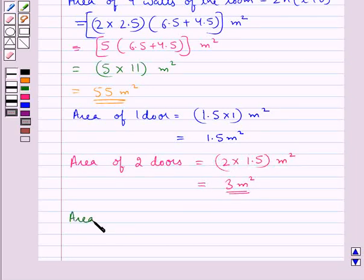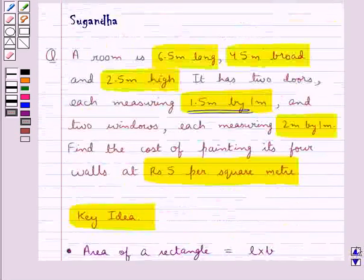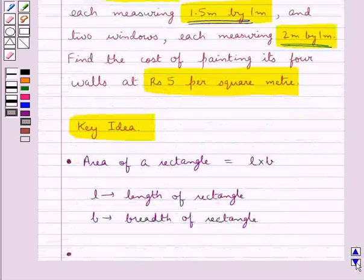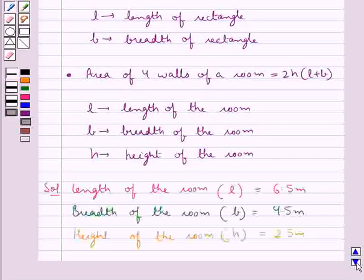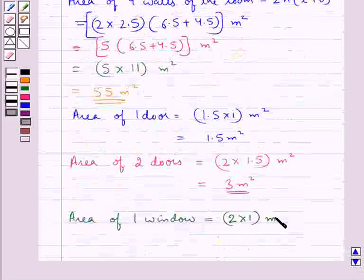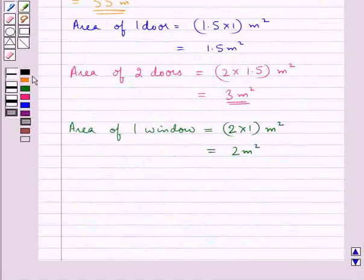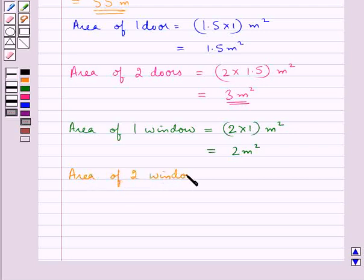Next, the area of 1 window: as given in the question, 1 window measures 2 meters by 1 meter. So the area of 1 window equals 2 into 1 = 2 meter squared. Since the room has 2 windows, the area of 2 windows equals 2 into 2 = 4 meter squared.